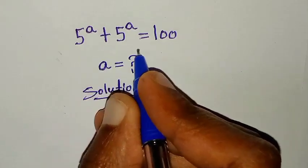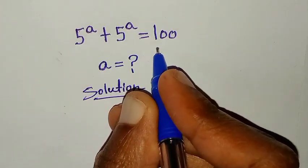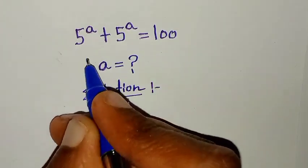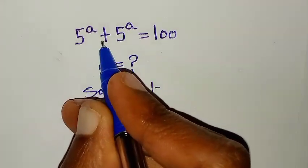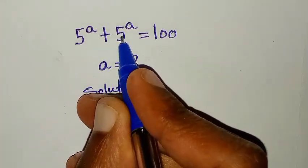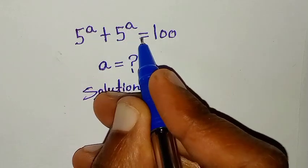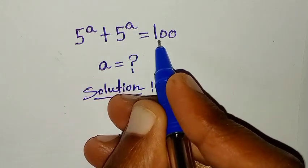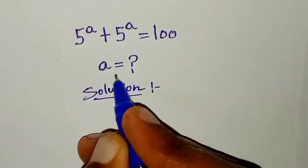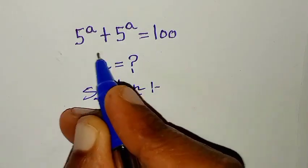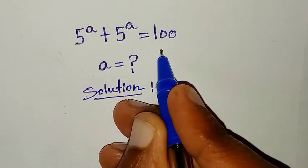Hello, you are welcome to solve this math problem which is 5 to the power of a plus 5 to the power of a is equal to 100. Find the value of a from this question.